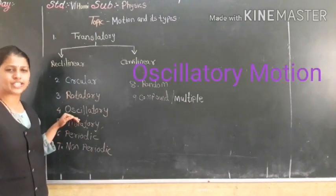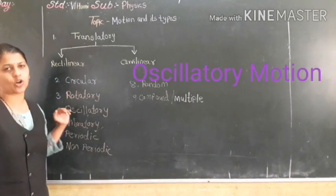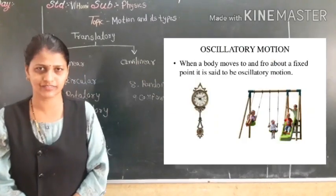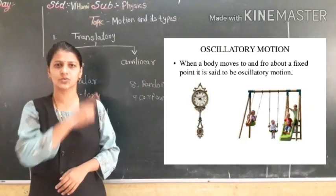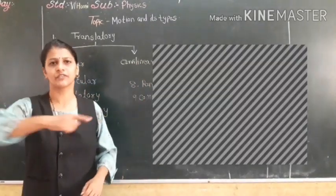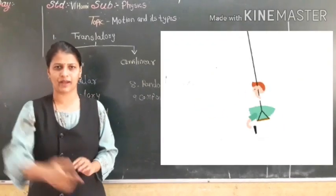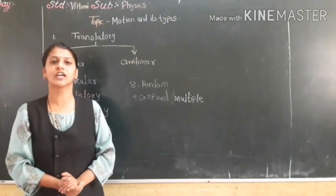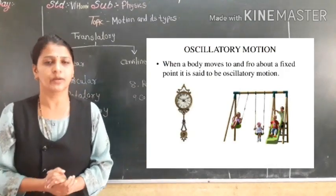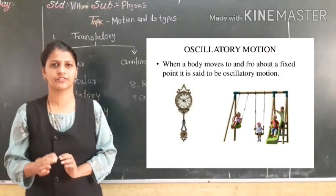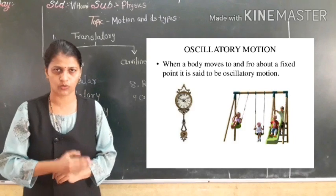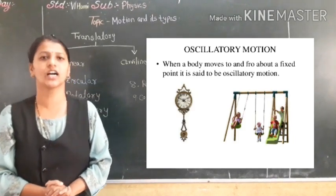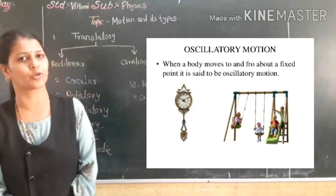Next is oscillatory motion. Have you visited a garden and seen a swing? It moves forward and backward. The object which moves to and fro — that motion is called oscillatory motion.